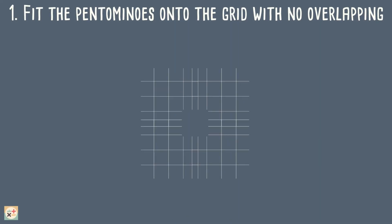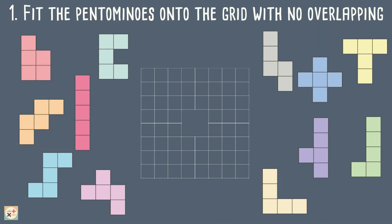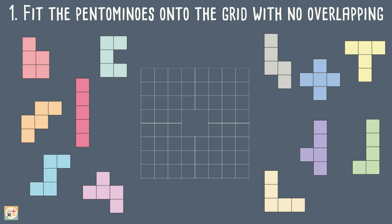This first puzzle is an 8x8 grid with four squares in the middle missing. See if you can fit all of these pentominoes onto the grid.